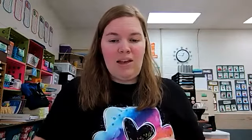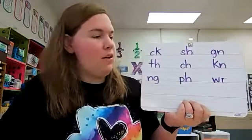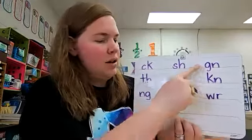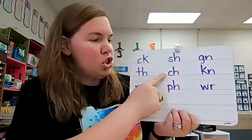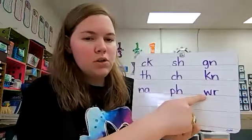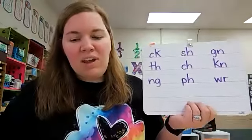What is a consonant digraph? Two consonants that come together to make one sound — it's a digraph made of consonants. I have listed them on the board and we're going to go through and read them together. Here are the consonant digraphs that we know. Let's read them together. How do we code digraphs? We underline them.